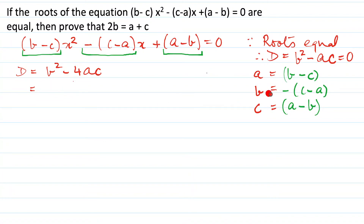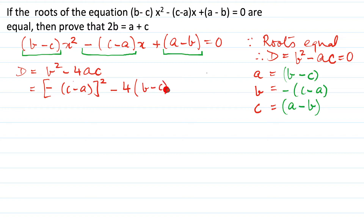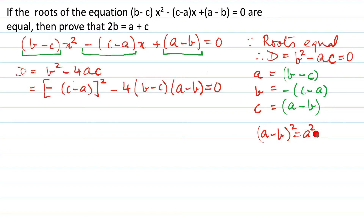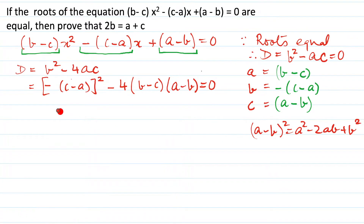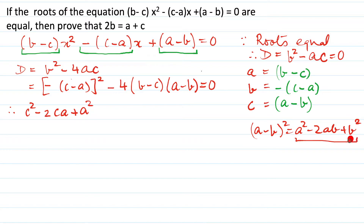Our b squared will be the square of (c minus a), so we write that out. Then minus 4 into a, which is (b minus c), into c, which is (a minus b), and that is equal to 0. Since it is a negative term, squaring gives a positive. Using the identity (a minus b) whole square equals a squared minus 2ab plus b squared, we get c squared minus 2ca plus a squared.